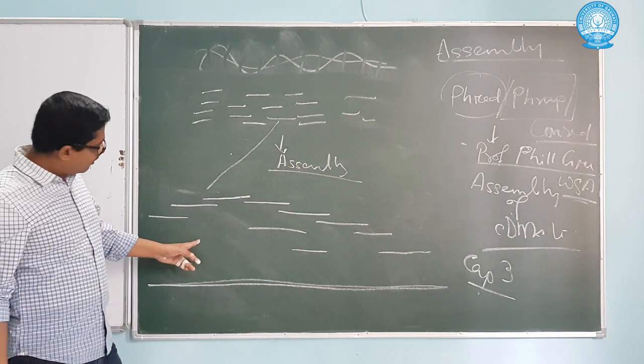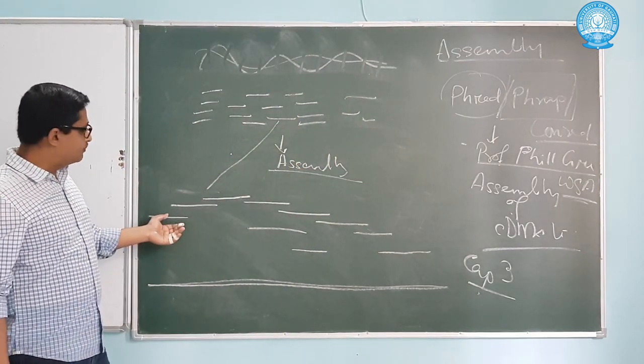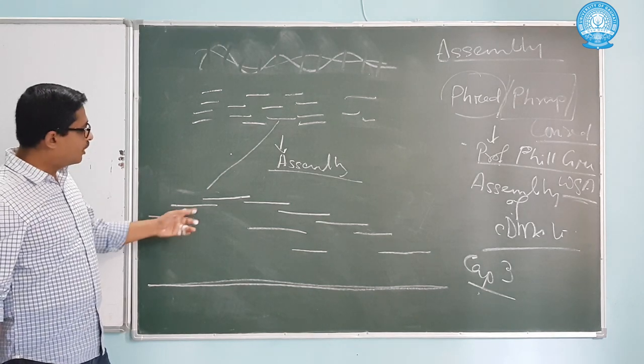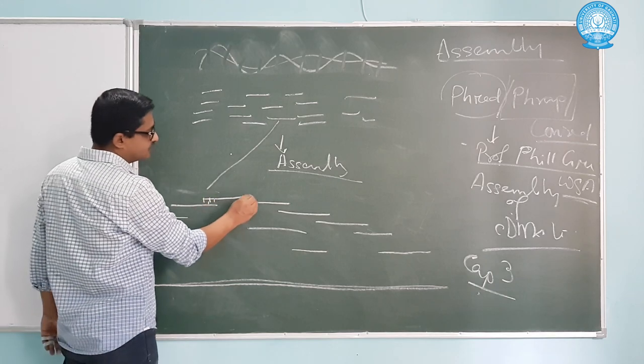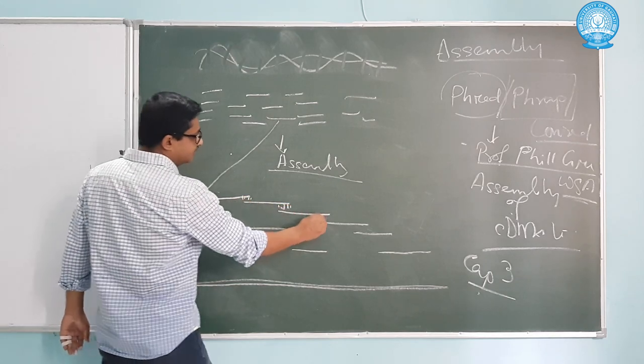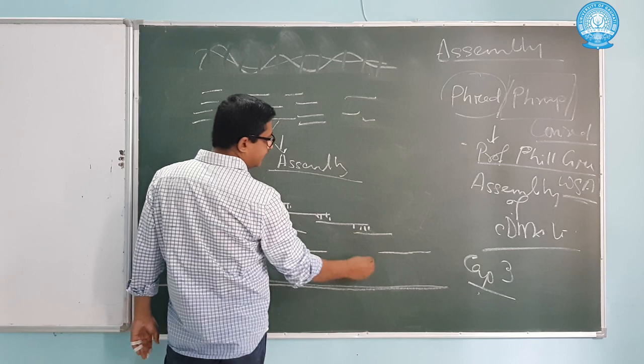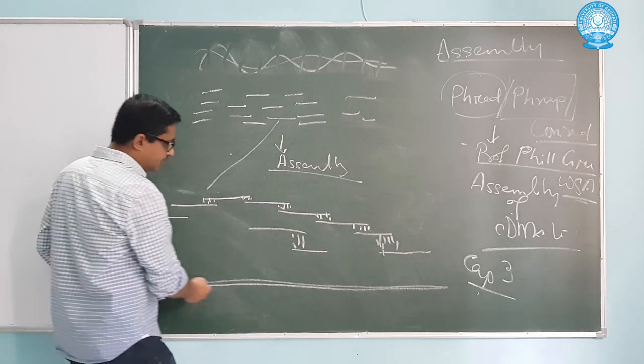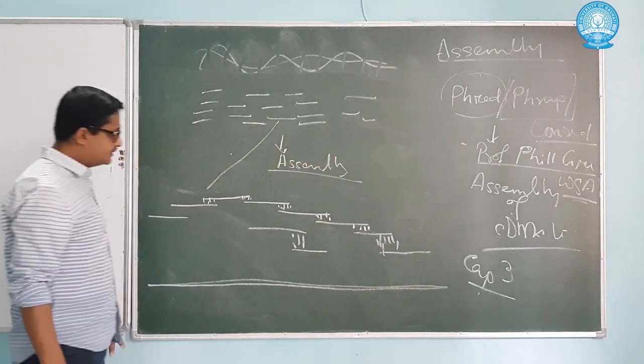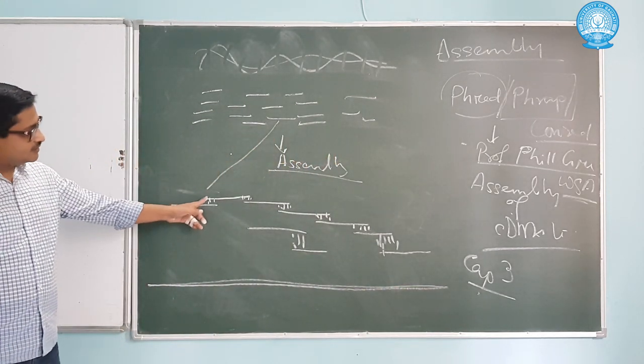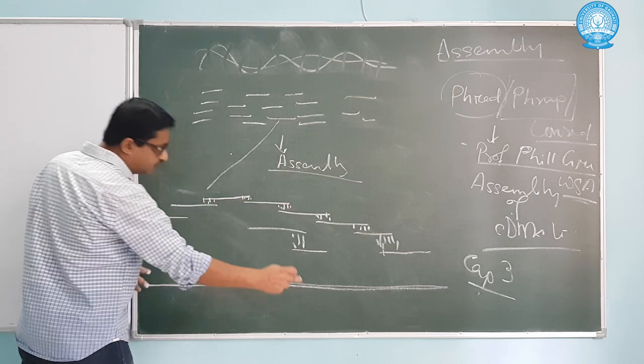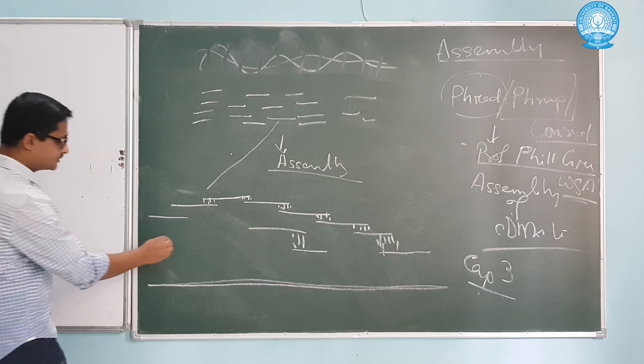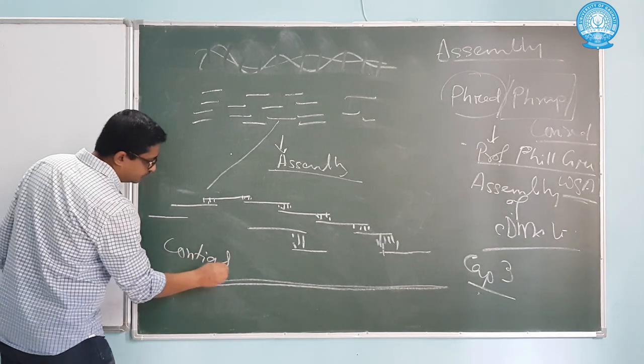This process of arranging different segments of your genome on the basis of overlapping sequences is called assembly in genomics. These sequences which represent one particular region are called contigs.